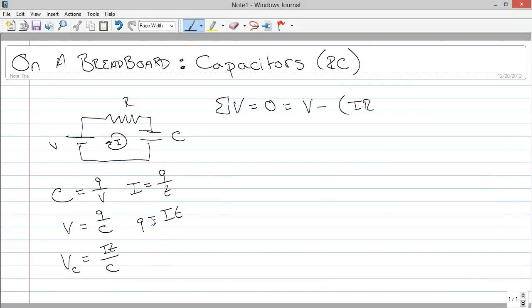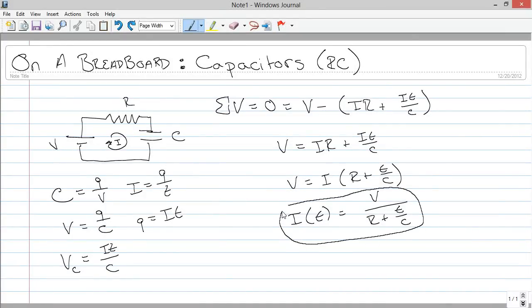So, what we have here is an equation that is defined by time. All right, so this plus IT over C, and there we go. So, we solve this, V equals IR plus IT over C, V equals I times R plus T over C. So, current as a function of time is voltage over R plus T over C. And there we go.